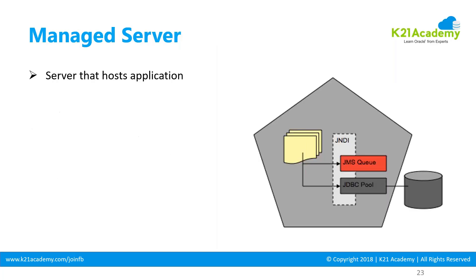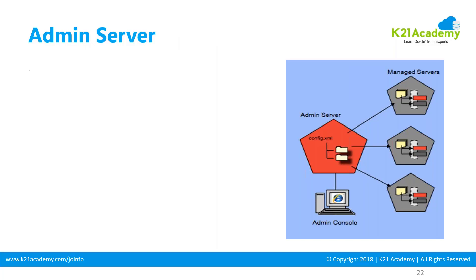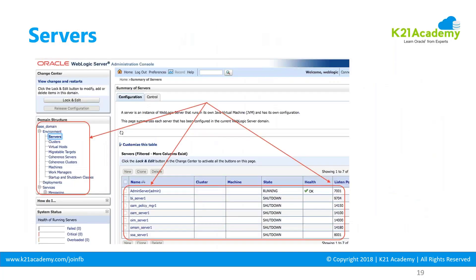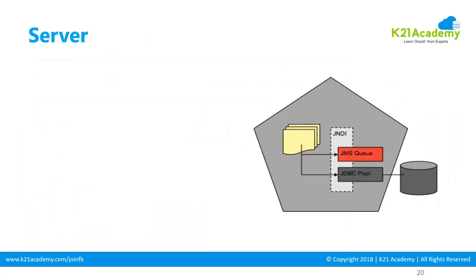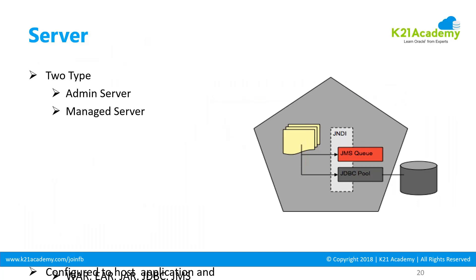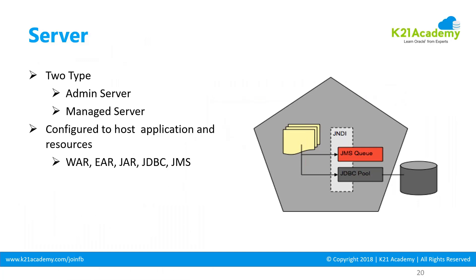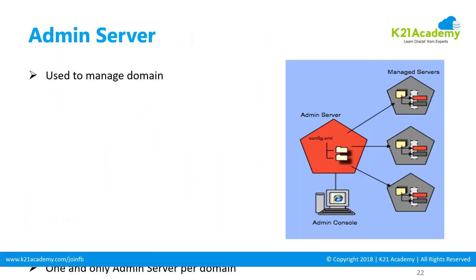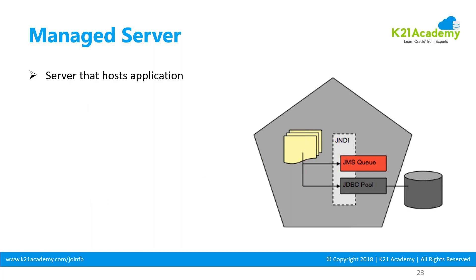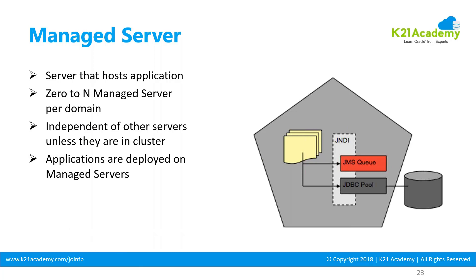Let me do a quick recap. Domain Home gets created when you configure a domain and it has a top-level directory containing all configuration files, log files, and start/stop scripts. You have servers of two types: Admin Server and Managed Servers. Each server represents a Java Virtual Machine and is where you host WAR, EAR, JAR, JDBC, and JMS files. Each server has its own JVM. There's a new concept in 12c called Dynamic Servers. Next lesson covers Admin Server, Managed Server, clusters, and Managed Server Independence.